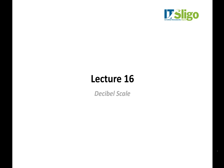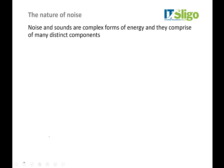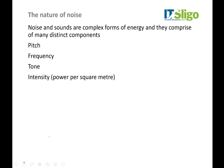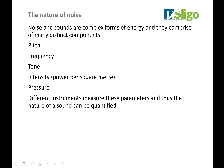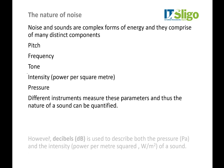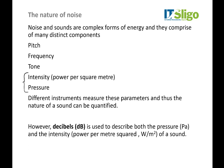In this video, we're going to take a look at another logarithmic scale, the decibel scale. First we're going to look at the nature of noise. Noise, sounds, or loudness are very complex forms of energy made up of many distinct parts: pitch, frequency, tone, intensity, and pressure, and different instruments are used to measure all of these parameters. But the two we're particularly interested in are the two measured by decibels — sound intensity, the power per square metre, and sound pressure. Both of these are described by the decibel level.